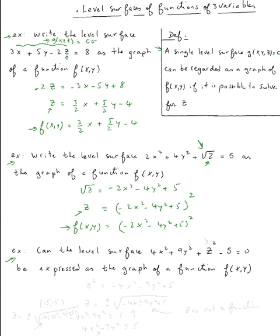Let's do the next example: can the level surface 4x² + 9y² + z² - 5 = 0 be expressed as the graph of a function of x, y? In this case it can't, because of the z². When we try to solve for z, we get z² = -4x² - 9y² + 5, and then z = ± √(-4x² - 9y² + 5). So we get two values.